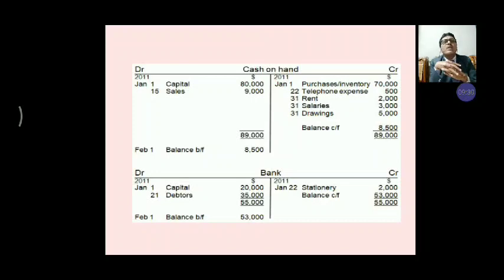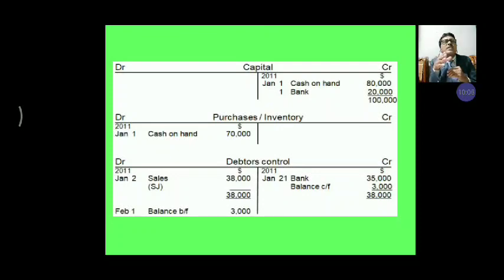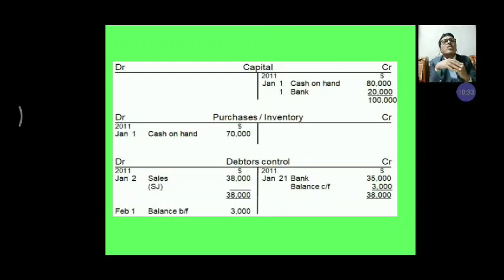This balance will be carried forward, and on 1st February the balance will be brought forward. Then, capital account: capital introduced by way of cash Rs. 80,000 and deposited into bank Rs. 20,000 — so capital account total Rs. 1 lakh. Then, purchase inventory account: cash on hand Rs. 70,000. Then, debtors account: on debit side, sales Rs. 38,000. The amount collected from debtors Rs. 35,000 by bank. On credit side, also Rs. 38,000 — so the remaining balance of Rs. 3,000 will be carried forward.